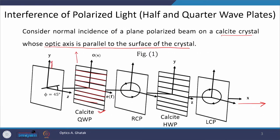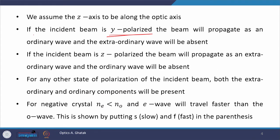If a beam is y-polarized, that is if the polarization is vertical, then this polarization is perpendicular to the direction of propagation k, the wave vector, and also perpendicular to the optic axis. This means y-polarized light will behave as an O beam or O ray for the calcite crystal oriented like this. Therefore, if the incident beam is y-polarized, the beam will propagate as an ordinary wave and the extraordinary wave will be absent.